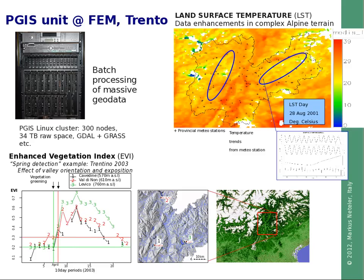Here are two example MODIS products. One is the Enhanced Vegetation Index, which can be used to detect vegetation onset and autumn arrival and assess vegetation productivity — an important proxy for different risk assessments. Another is the Land Surface Temperature product, illustrated here for complex alpine terrain where we have been developing an updated dataset. Data processing runs on our GIS computer cluster, which currently has 300 nodes available.